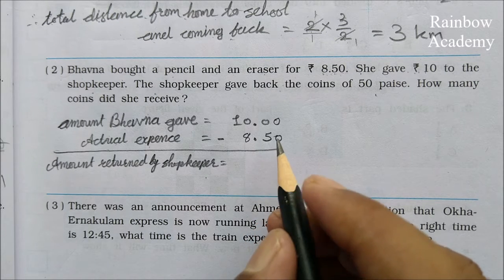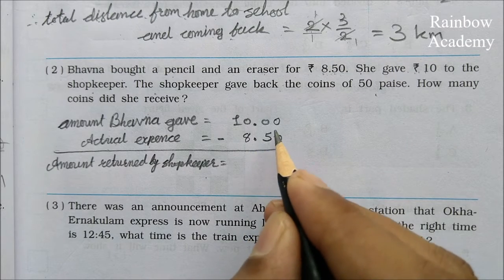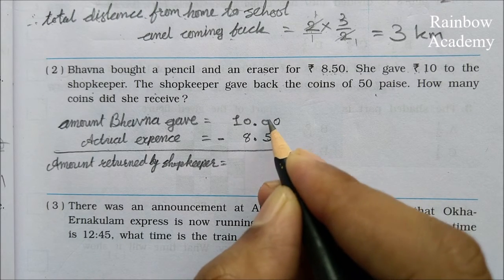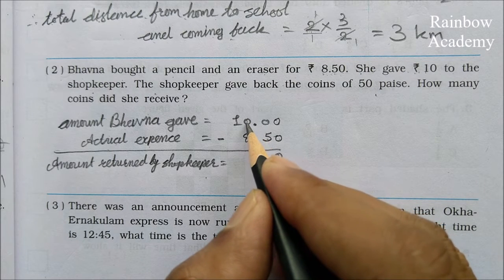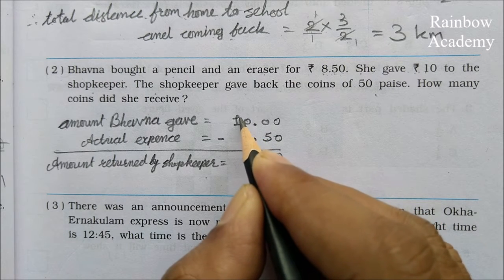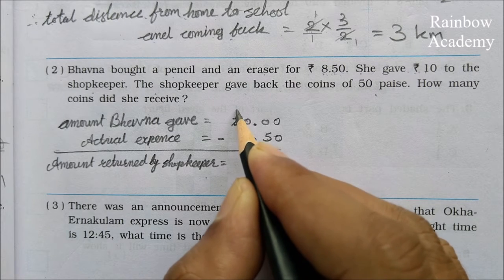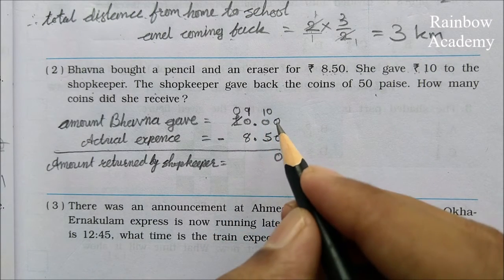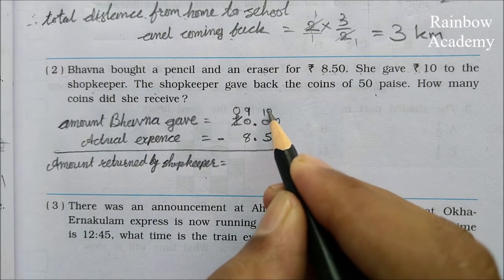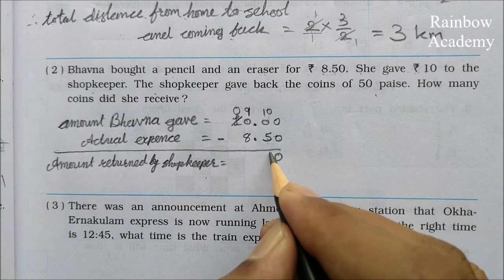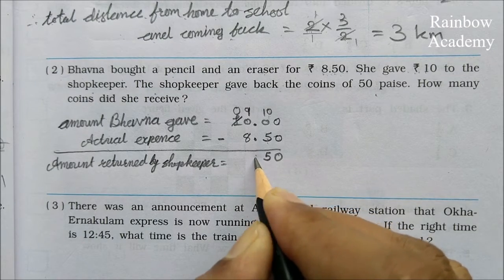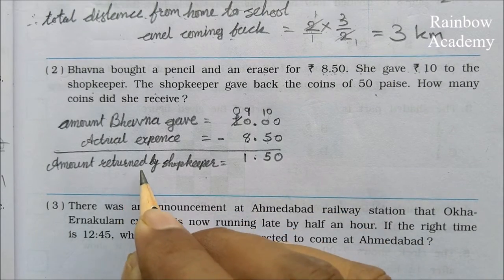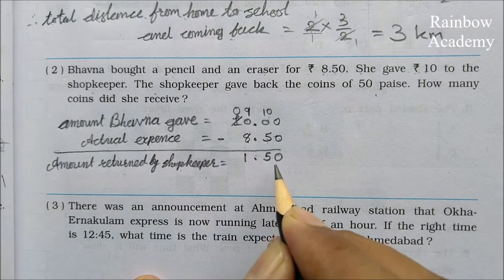We need to find the balance to return. Zero minus five is not possible, so we borrow. After borrowing, ten minus five is five, nine minus eight is one. So the shopkeeper has to return Rs. 1.50.